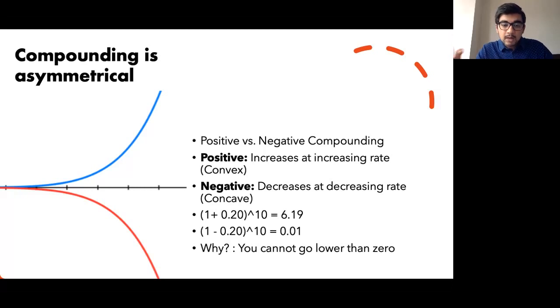But interestingly, look what happens if you flip the sign, if you completely look at it from the opposite point of view. If I have a stock and it is decreasing every year by 20%, so supposing I have a hundred rupees of a stock today in one year, it becomes 80 and it keeps reducing by 20% every year, my money will basically go to 0.01. So if I put like one rupee and it compounds negatively at 20% for the next 10 years, my money just goes to say 0.01.